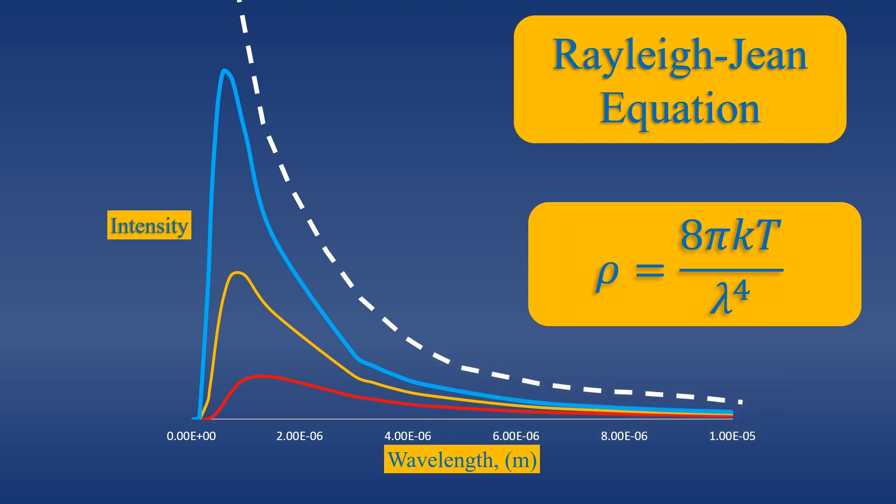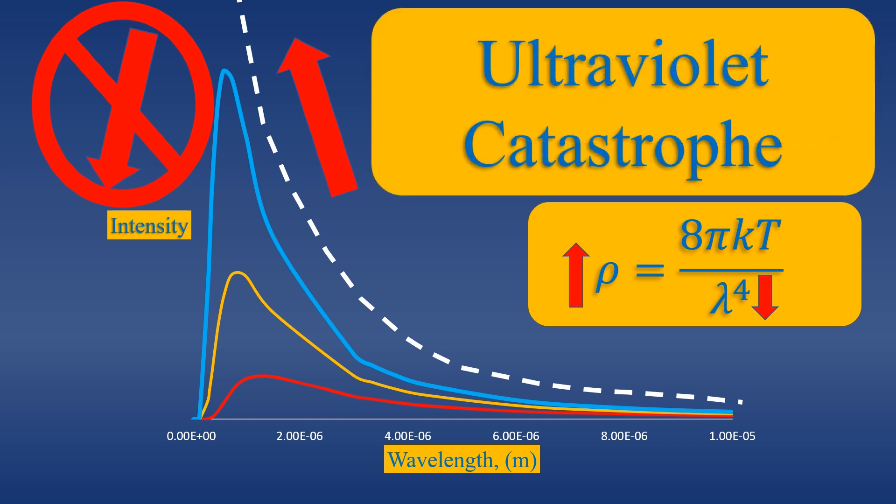But at smaller wavelengths, the Rayleigh-Jean equation increases exponentially and never comes back down. This is in disagreement with the experimental data. This is called the ultraviolet catastrophe.